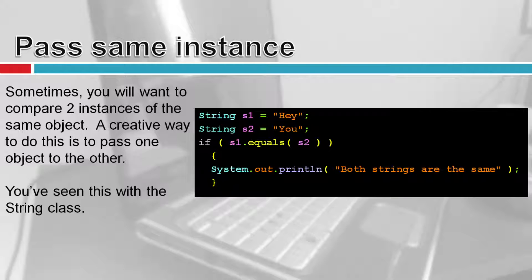Another type of relationship is passing the same instance into another instance. Sometimes you want to compare two objects of the same class. You've seen this with strings — there's a function called 'equals' that returns a boolean. When I call 'string1.equals(string2)', I'm calling the equals function of string one and passing it string two, and it returns a boolean back — one instance passed into the other, returning a value.